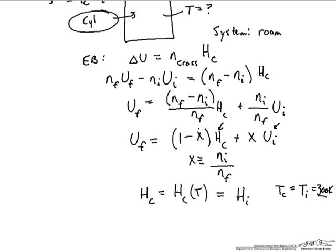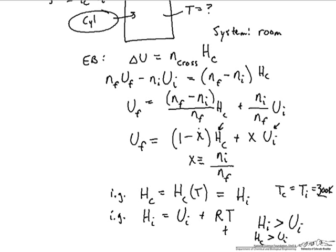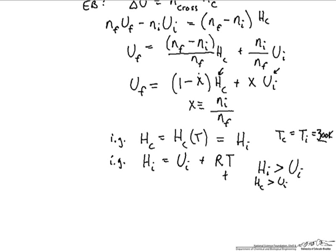That makes things easier. The other key relationship for an ideal gas is that enthalpy equals internal energy plus RT. Since R times an absolute temperature is always a positive number, h_i is always greater than u_i. Since h_c equals h_i, h_c is also greater than u_i. Therefore, u_f must be greater than u_i.